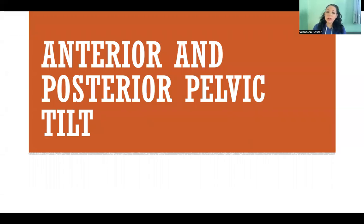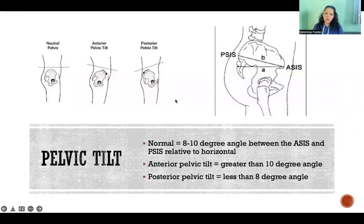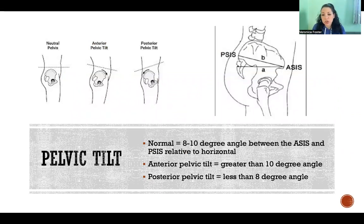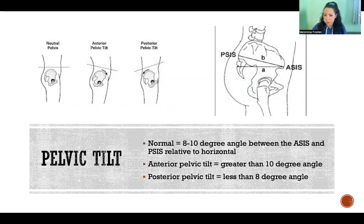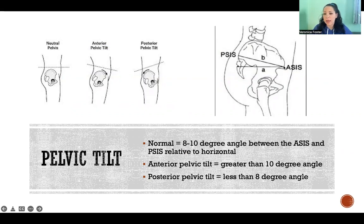Hello, in this video I'm going to explain anterior and posterior pelvic tilt. Anterior pelvic tilt and posterior pelvic tilt are named for the direction that the ASIS is moving. ASIS meaning the anterior superior iliac spine, which is right here — it's that prominent bump right in the front of your hip. That's your ASIS.